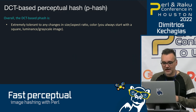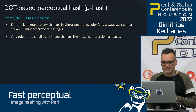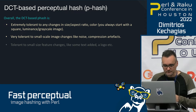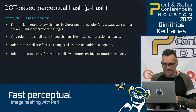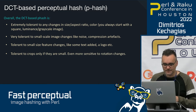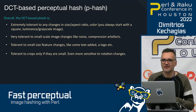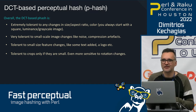Overall, pHash is extremely tolerant to aspect ratio, size, and color changes — since we always start with a 32x32 grayscale. It's very tolerant to small-scale noise and compression artifacts, which are removed by the DCT process. It's tolerant to small feature changes like added text or logos. It's tolerant to small crops. Rotation beyond about five degrees starts to confuse it. Overall it's what I wanted for the application.